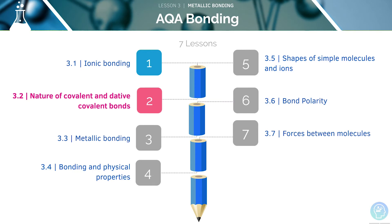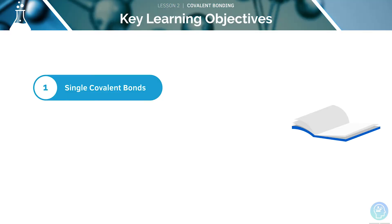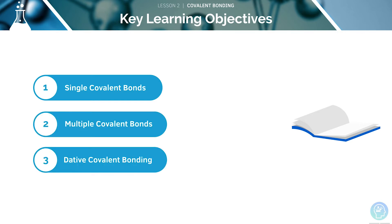This is the second video in our series of seven lessons on the topic of bonding. In the last lesson, we looked at ionic bonding and the formulae of ionic compounds. Here are the key learning objectives for this lesson: we'll start off by looking at single covalent bonds, move on to multiple covalent bonds, and finally look at dative covalent bonding.